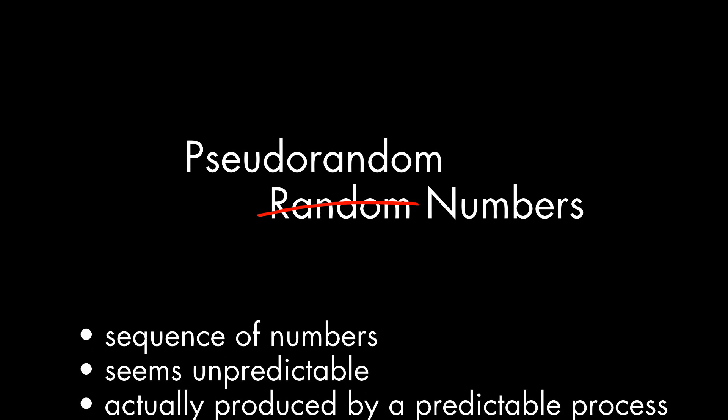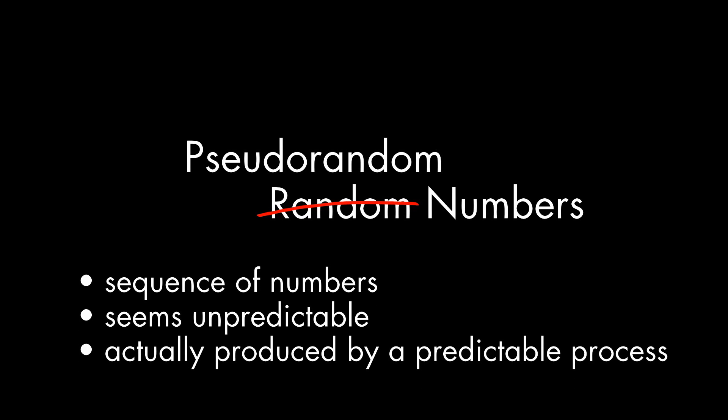The answer is, it can't. There's actually no way for software to produce a truly random number. So instead, software makes use of what is known as pseudo-random numbers — a series of numbers in a particular range that seems unpredictable, but is actually produced by a straightforward mathematical process.